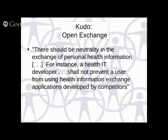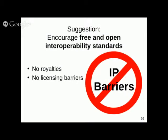Another kudo: the roadmap encourages open exchange, saying there should be neutrality in the exchange of personal health information. One suggestion: it is very important to encourage free and open interoperability standards. Right now not all interoperability standards are free and open — some have royalties, others have licensing barriers preventing free and open use. The ONC can take an important leading role in encouraging free and open interoperability standards. There should be no IP barriers to interoperability.